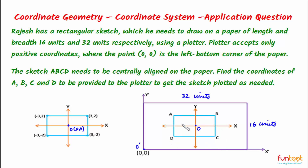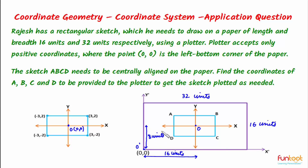If ABCD has to be centrally aligned, then the horizontal distance of O from O dash should be half of 32 units, that is 16 units. And the vertical distance of O from O dash should be half of 16 units, that is 8 units. So 16 units will be the X coordinate and 8 will be the Y coordinate for O in the X dash Y dash coordinate system.